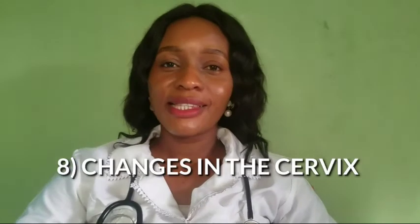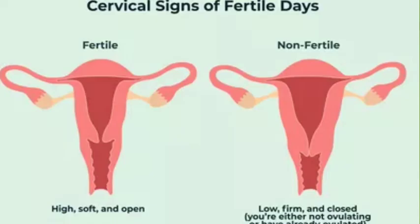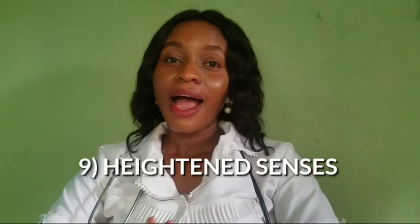The seventh sign is nausea and headache. Many women ask: can ovulation make you feel sick? The answer is yes. Nausea and headache are two side effects of ovulation due to changes in hormone levels — estrogen and progesterone. The eighth sign is changes in the cervix. During ovulation, your cervix may become higher, softer, and more open, and you may even have difficulty reaching it. When you are not in your fertile period, your cervix is lower, harder, and more closed. However, this can only be assessed by health workers.